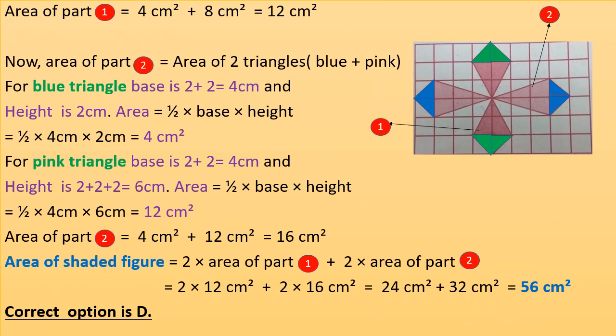Area of part one equals 4 cm squared (area of green triangle) plus 8 cm squared (area of pink triangle below the green triangle), giving a total area of 12 cm squared.